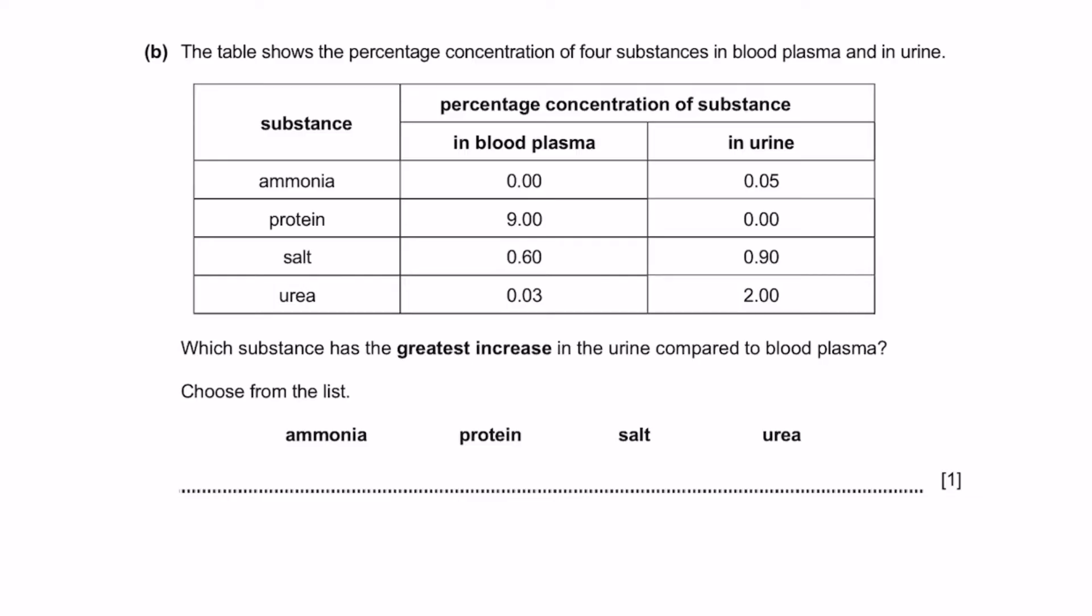Part B: The table shows the percentage concentration of 4 substances in blood plasma and urine. Which substance has the greatest increase in urine compared to blood plasma? Choose from the list: Ammonia, protein, salt or urea? Let's see the increase for each substance. This is 0.05. Protein is actually minus. Salt is plus 0.30. But then urea is plus 1.97. So this is the highest increase. That's our answer.